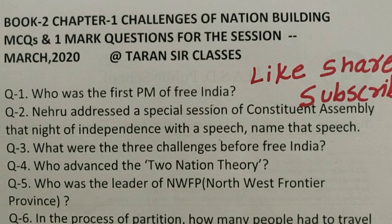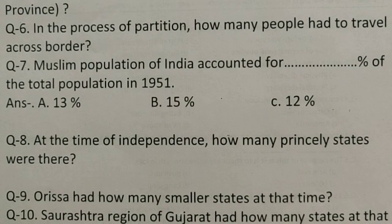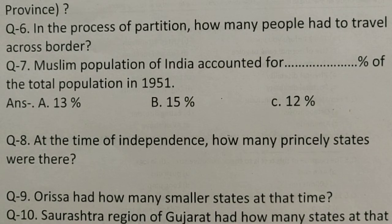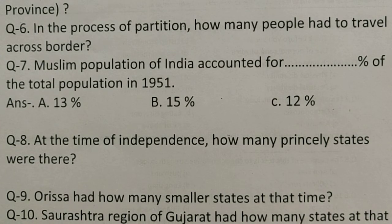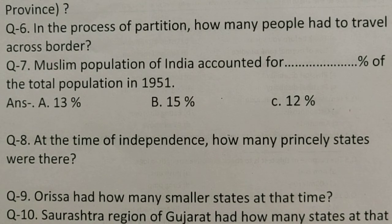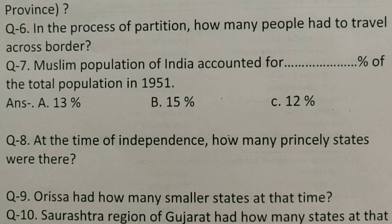Question number six: In the process of partition, how many people had to travel across the border? The right answer is 80 lakh people, and between 5 to 10 lakh people were killed on their way, as the crisis was very deep. Question number seven: Muslim population of India accounted for what percentage of the total population in 1951? Your options are 13%, 15%, or 12%. The right answer is 12 percent.